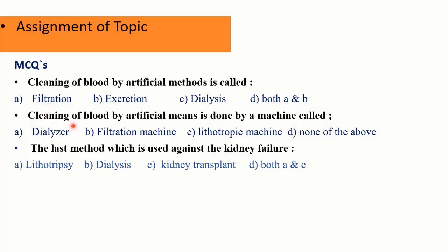MCQ 2: Cleaning of blood by artificial means is done by a machine called — A: dialyzer, B: filtration machine, C: lithotriptic machine, D: none of the above.